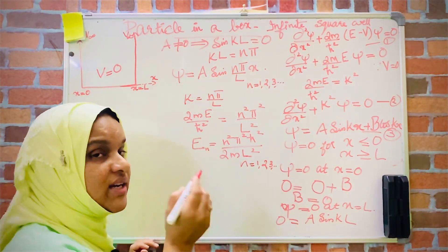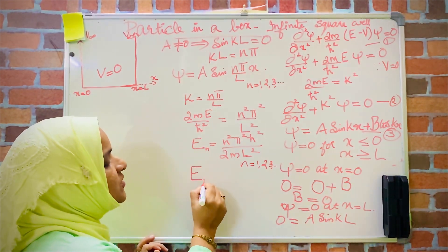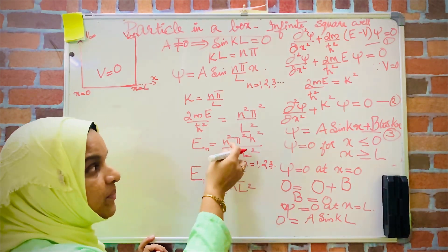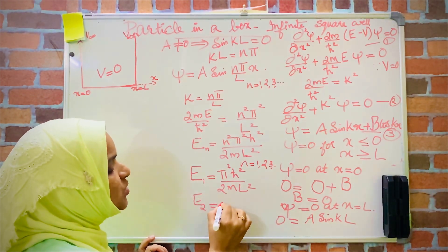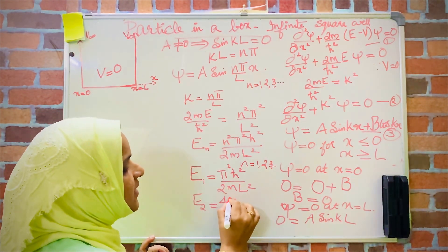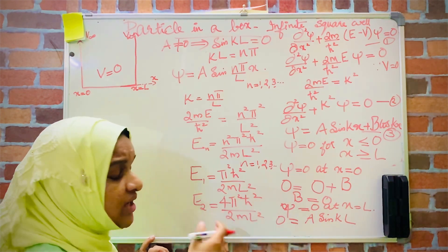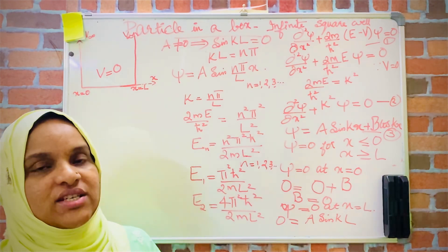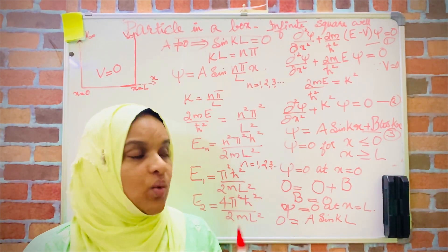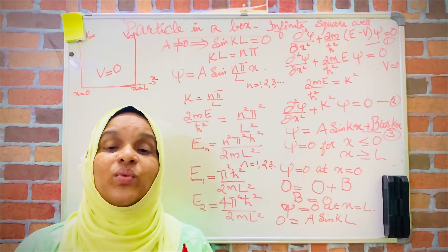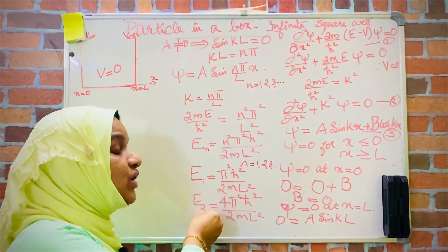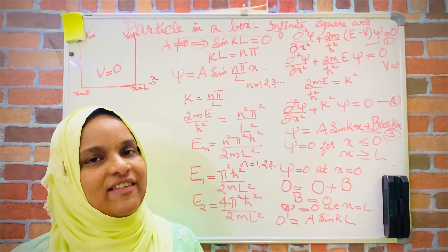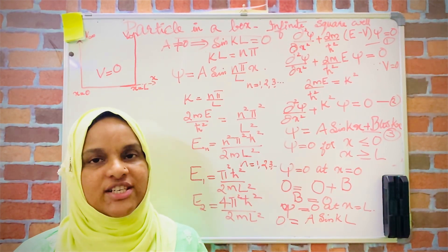Putting n=1: E₁ = π²ħ²/(2mL²). For n=2: E₂ = 4π²ħ²/(2mL²). For n=3: E₃ = 9π²ħ²/(2mL²), and so on. This represents the energy levels of a particle trapped inside the box. The particle cannot take any arbitrary value of energy — it must take particular values E₁, E₂, E₃, E₄, etc. The energy levels are quantized.